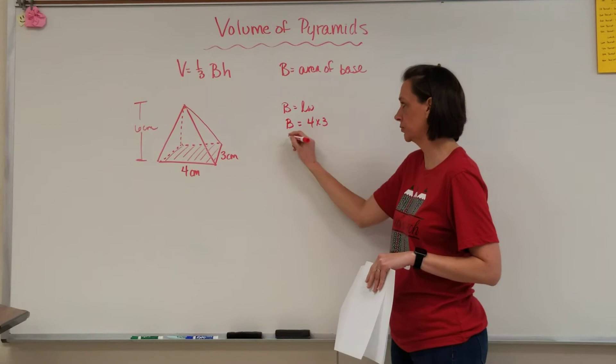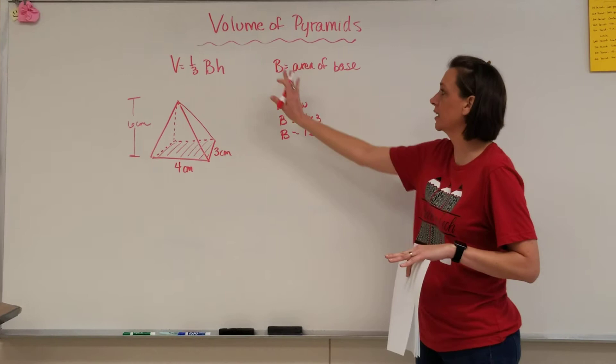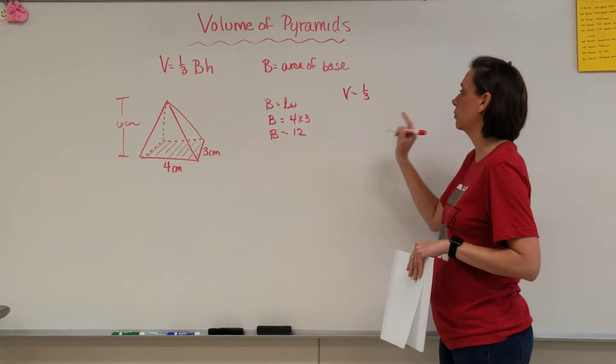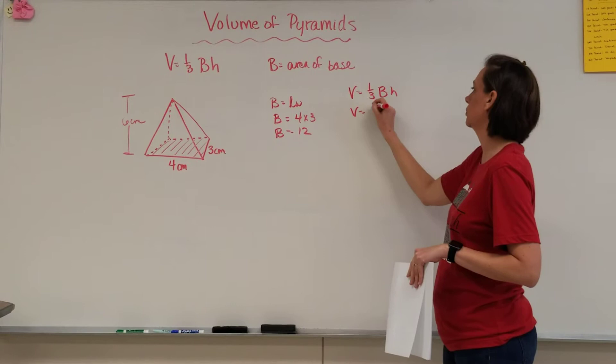So volume is going to equal one-third of the base times the height. So let's plug in what we know. In this case, the base was 12. And then I have the height of the entire pyramid. Remember,